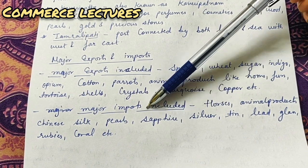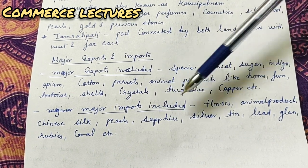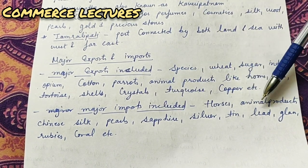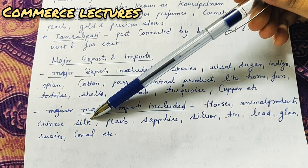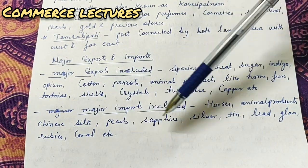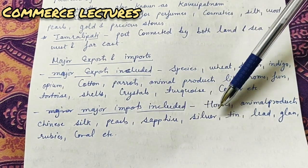Now for imports - what was mostly imported at that time. The major imports included: Horses, Animal Products, Chinese Silk, Pearl, Sapphire, and Silver. These were the main goods imported into ancient India.